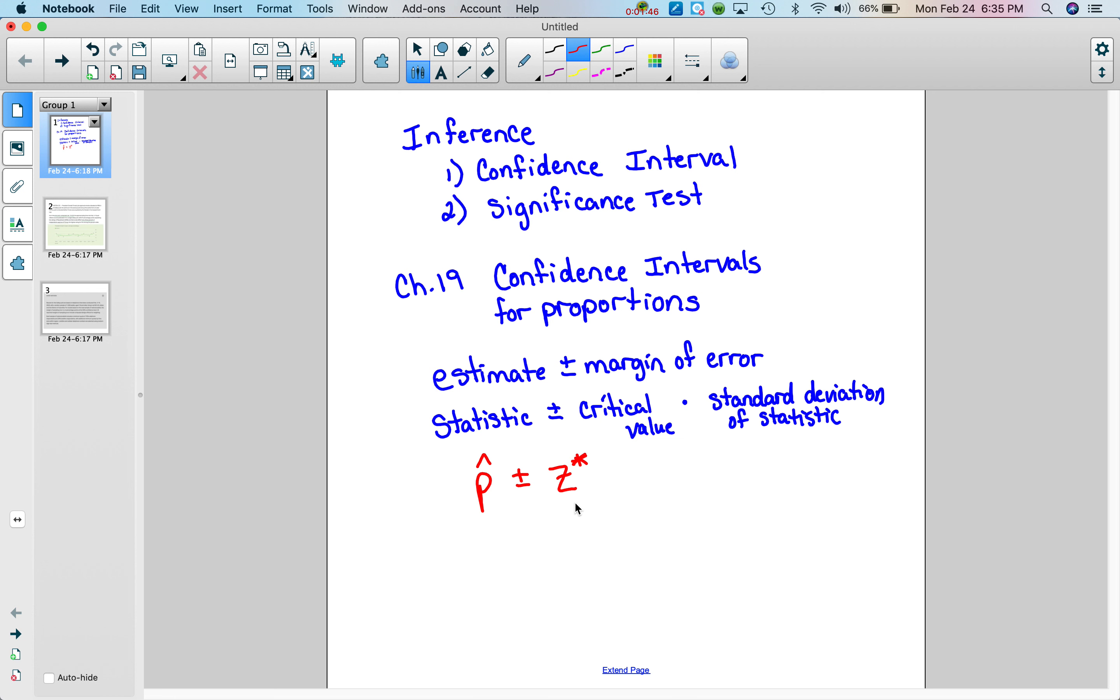We have a z star value times, and then for the standard deviation of the statistic we use something called the standard error. So we use that SE for standard error of our p hat value.